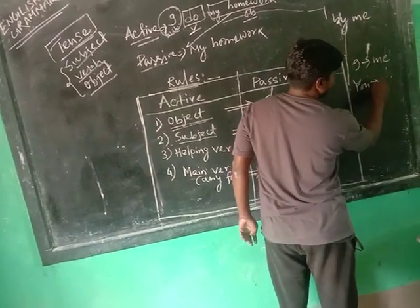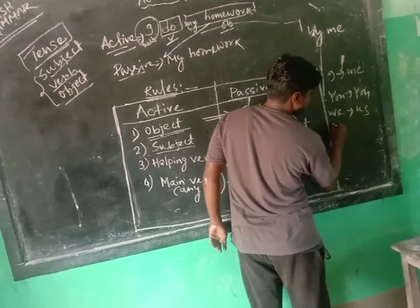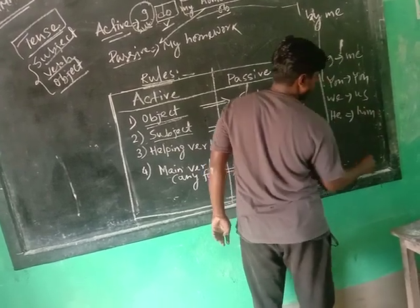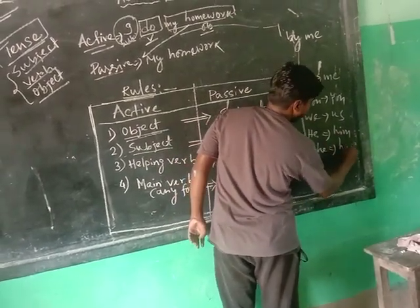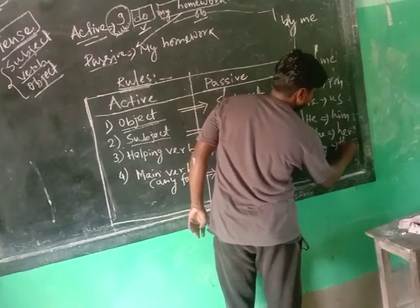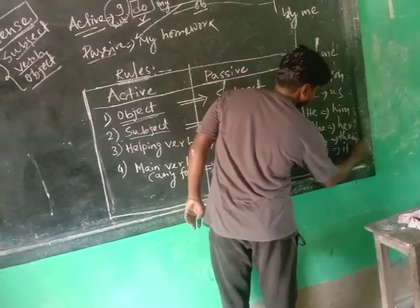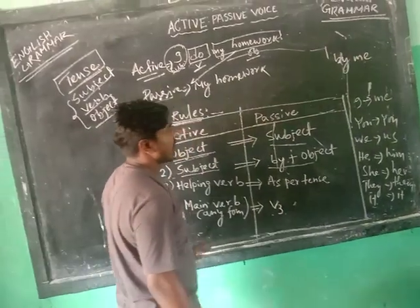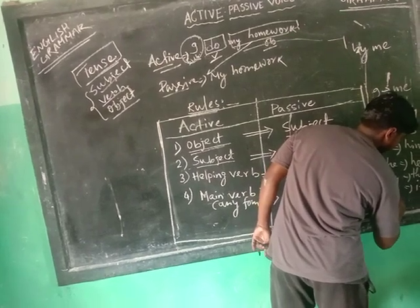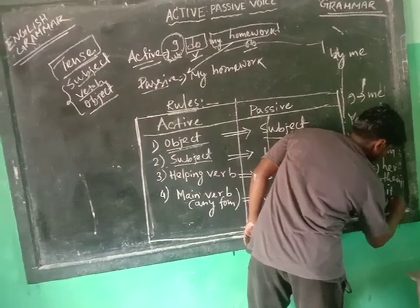Here is the pronoun change table: 'you' will change to 'you'; 'we' will change to 'us'; 'he' will change to 'him'; 'she' will change to 'her'; 'they' will change to 'them'; and 'it' will change to 'it' or 'itself'. If any name comes, like Ram or any other name, the name will remain the same.